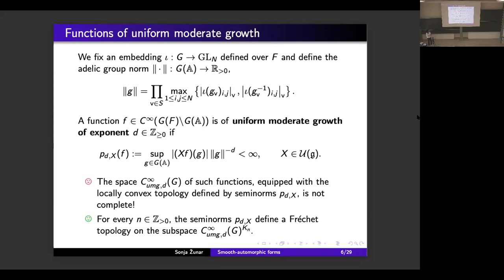One easily sees that if we equip this space with the locally convex topology defined by seminorms p_{D,X}, we do not obtain a Fréchet space because the space we obtain is not complete. However, for every strictly positive integer n, the seminorms p_{D,X} do define a Fréchet topology on the subspace of K_n-invariants in C∞_UMG,D(G) — so these are right K_n-invariant functions in C∞_UMG,D(G). Note also that the union of all of these subspaces of K_n-invariants is the whole space C∞_UMG,D(G).